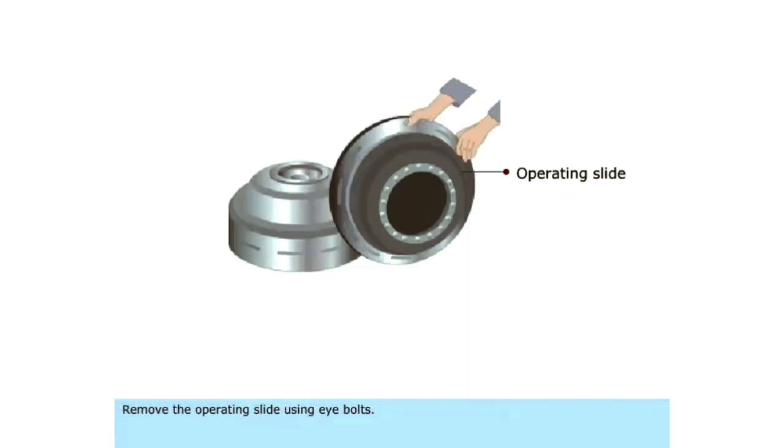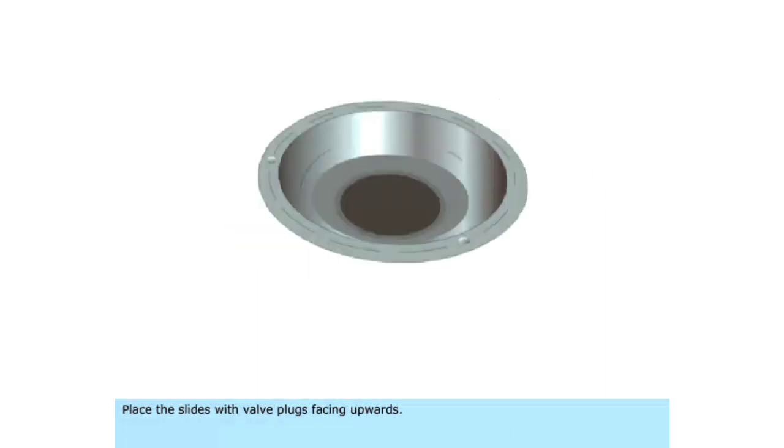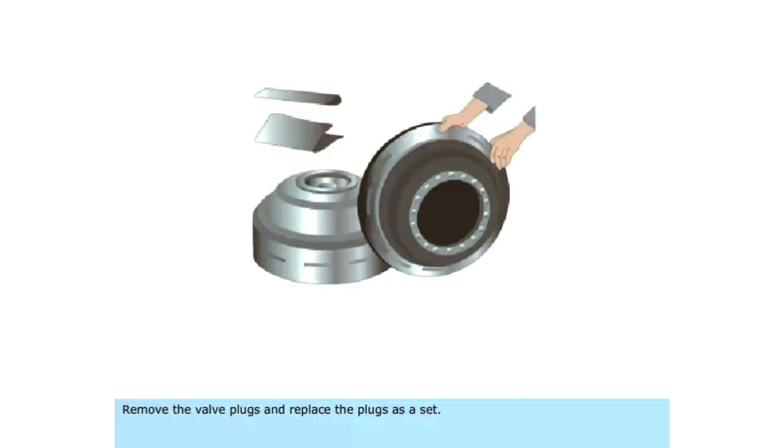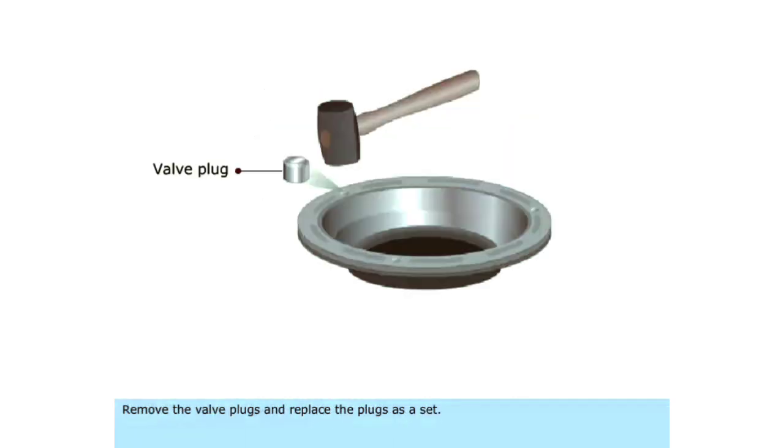Remove the operating slide using eye bolts. Place the slides with valve plugs facing upwards. Remove the valve plugs and replace the plugs as a set.